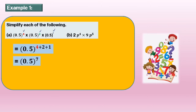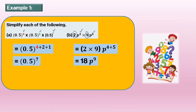Now look at part b: 2p power of 4 multiplied by 9p power of 5. We multiply the numbers first: 2 times 9, giving p power of 4 plus 5, so it equals 18p power of 9.